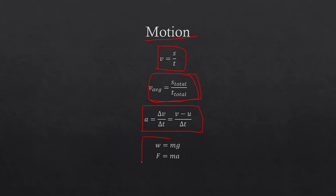Weight is equal to mass times gravity, and force equals mass times acceleration. Comparing those two equations, when gravity is the only accelerating force, a = g and F = W, meaning weight is the force an object experiences when gravity is the only force acting on it. The value for gravity on Earth as an accelerating force is 9.81 m/s², while the gravitational field strength is 9.81 N/kg.